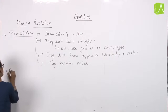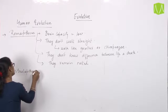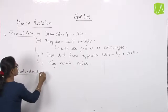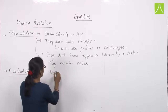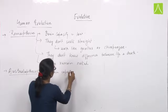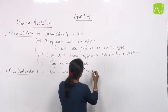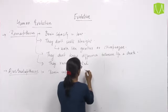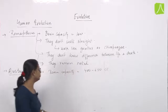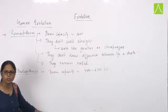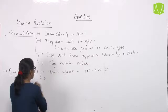After Ramapithecus came Australopithecus. Australopithecus also had very low brain capacity — around 400 to 650 cc cubic volume. Their brain capacity was still very low.